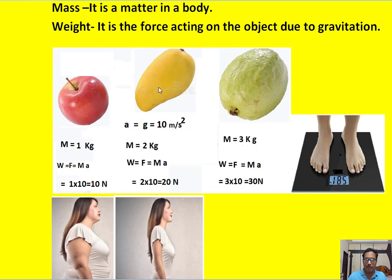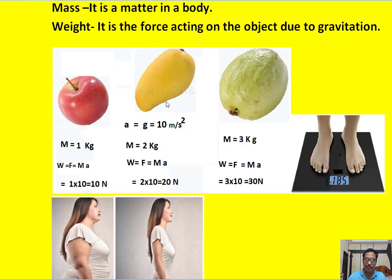Similarly, when we take the mango whose mass is 2 kg and apply Newton's second law, weight equals F equals M into A. So M is 2 kg and the acceleration acting on this mango is 10 meters per second squared. So 2 into 10, we get 20 Newtons. The weight of 2 kg of mango is 20 Newtons.